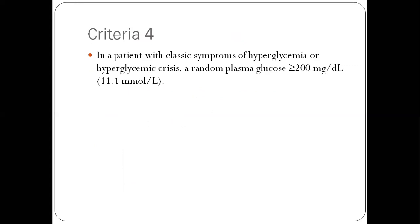The fourth criteria is the one we use most commonly and is also often misused. In a patient with classic symptoms of hyperglycemia or hyperglycemic crisis, a random plasma glucose of more than or equal to 200 mg per dL. If your patient has the classical symptoms of polyuria, polydipsia and weight loss, and you find any value of plasma glucose which is more than 200, whether fasting or postprandial or whatever, you can diagnose diabetes. If you have a hyperglycemic crisis like a DKA episode, you can diagnose diabetes on that basis alone.